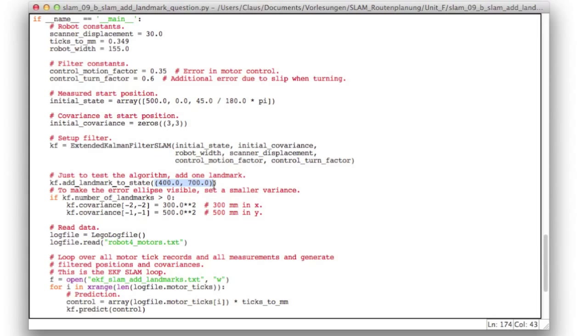And if your code works correctly, you will see this landmark at that position later on. But the error ellipse will be so large that you can't see it. So I also added some code to set the variance in x to 300 mm and in y to 500 mm. So you will see not only the landmarks position, but also a suitable error ellipse.